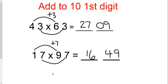And there you have it, one thousand six hundred and forty-nine. That's the add to tens first digit trick.